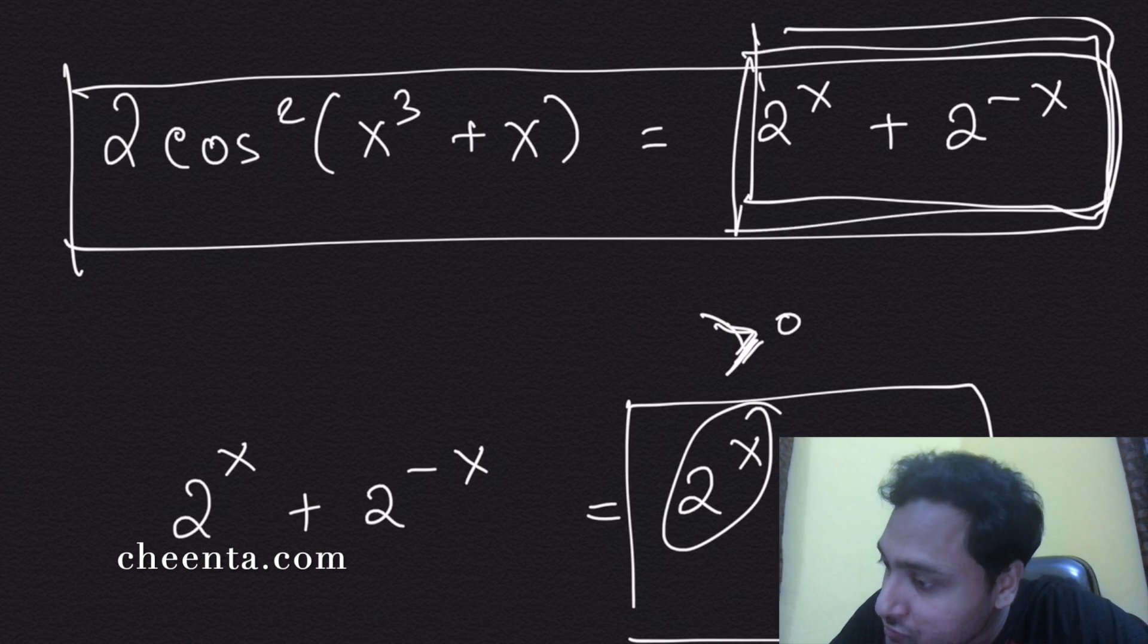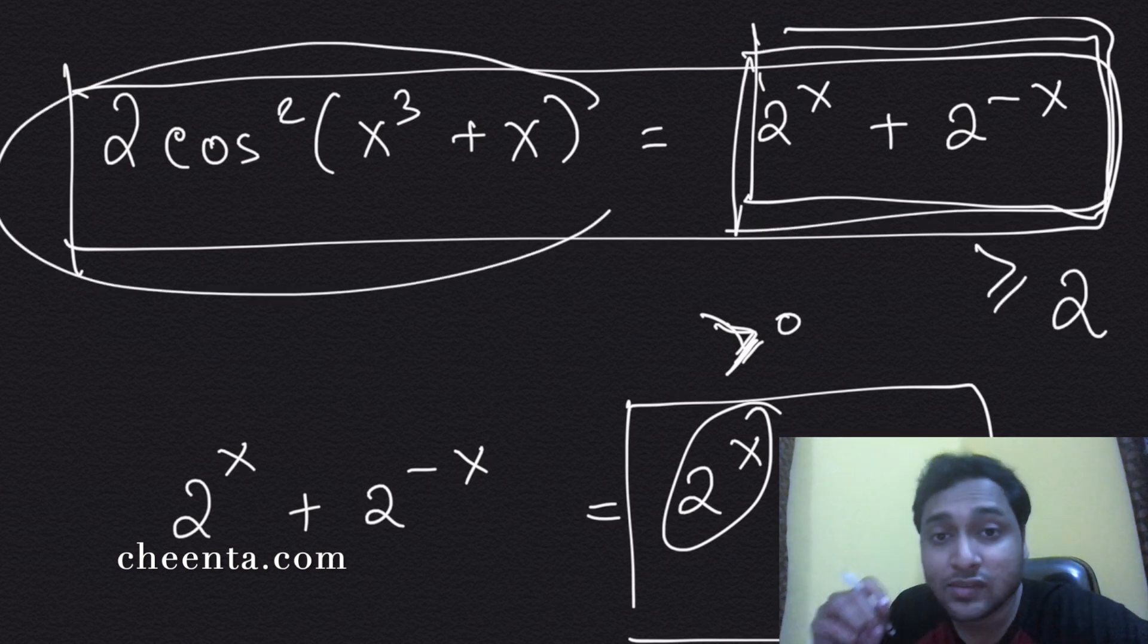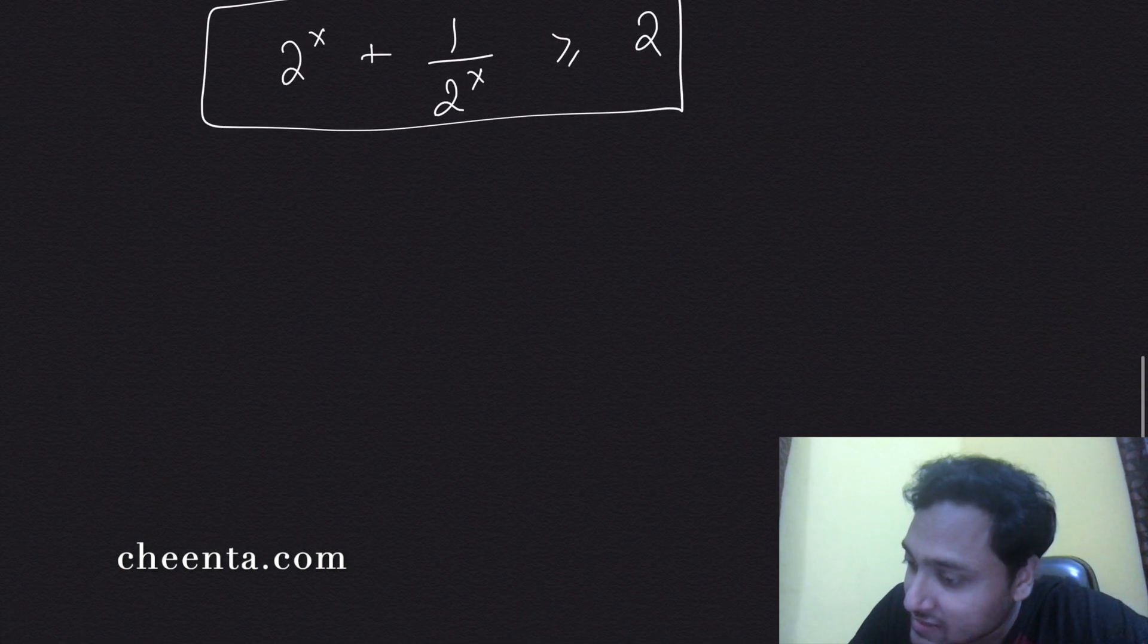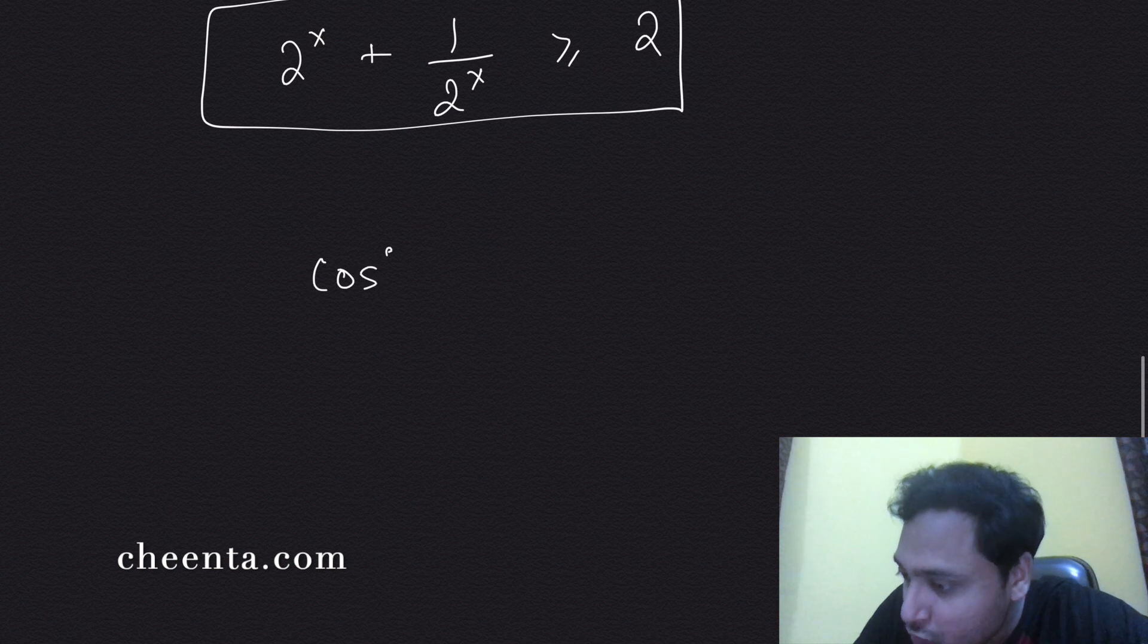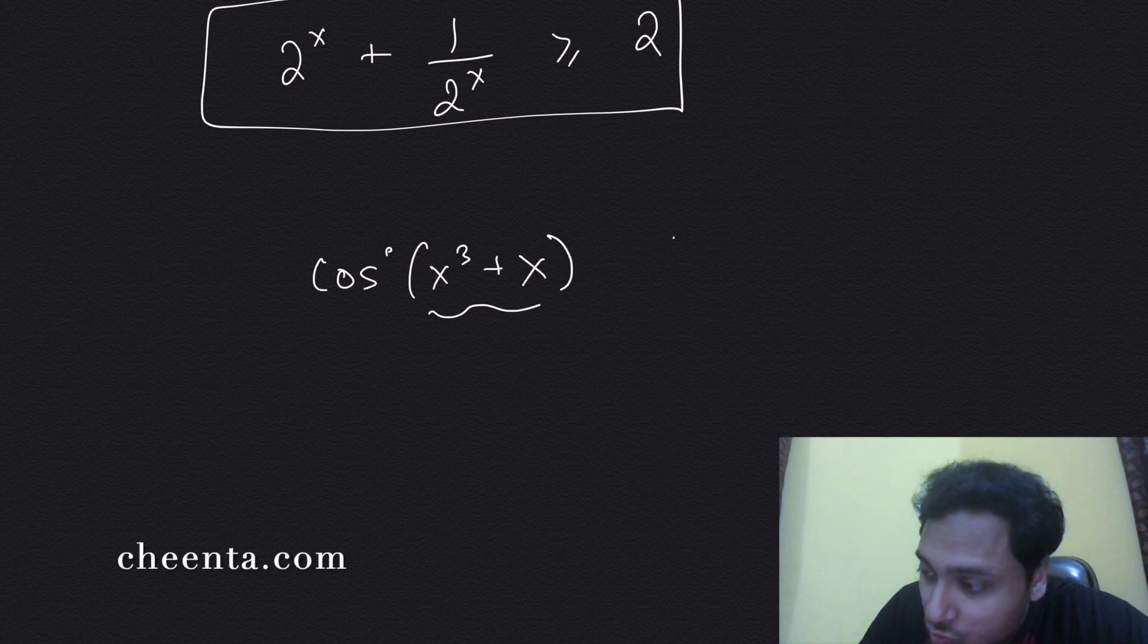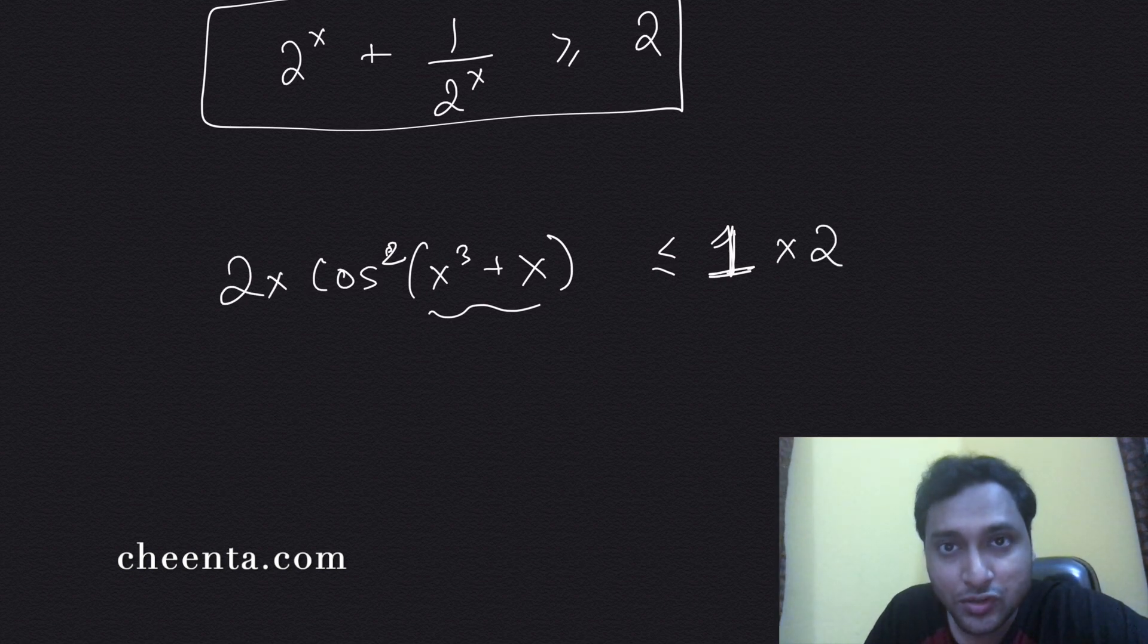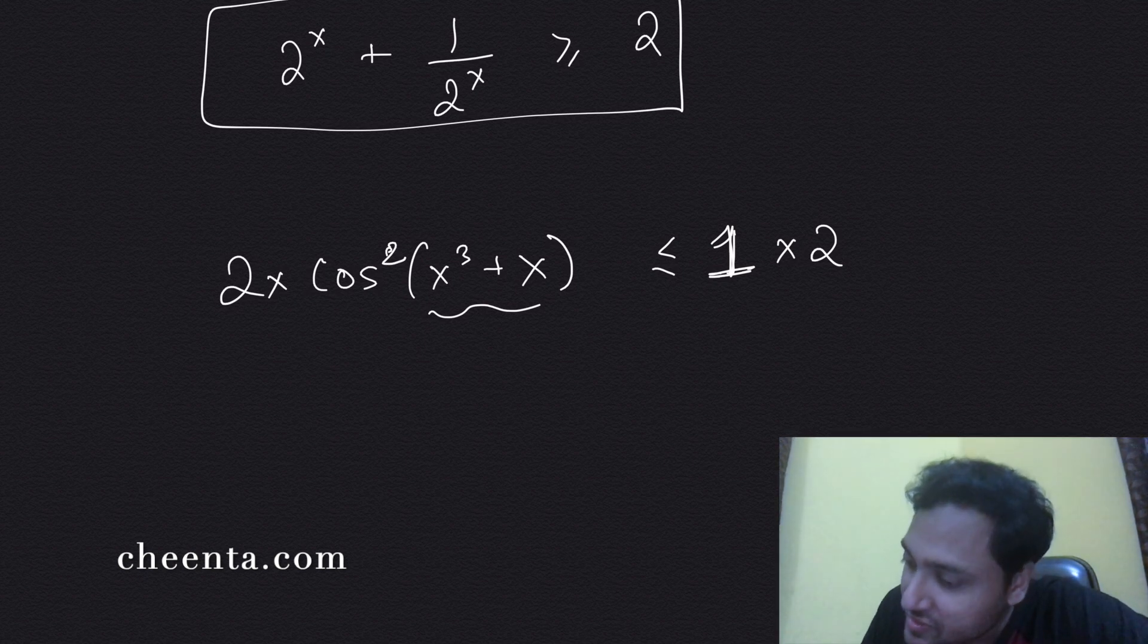So we have this: the right-hand side is greater than or equals to 2. The left-hand side is 2 times cosine squared (x³ + x). Now this is very simple. Cosine of anything is less than or equals to 1, so cosine squared is definitely less than or equals to 1 as well. Two times cosine squared is always less than or equals to 2.